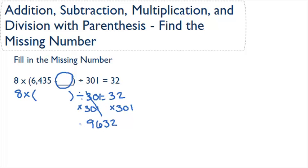That's what we have on this side of our equals sign now. So we have 8 times something in parentheses is going to equal 9,632. Now if 8 times something equals 9,632, we can divide by 8 to figure out what that something is. So now we have something in parentheses equals 1,204.